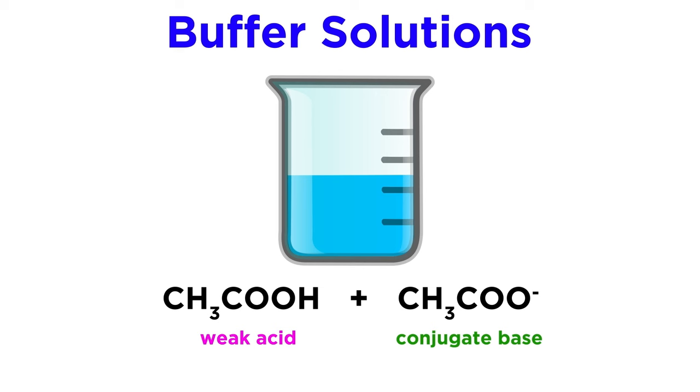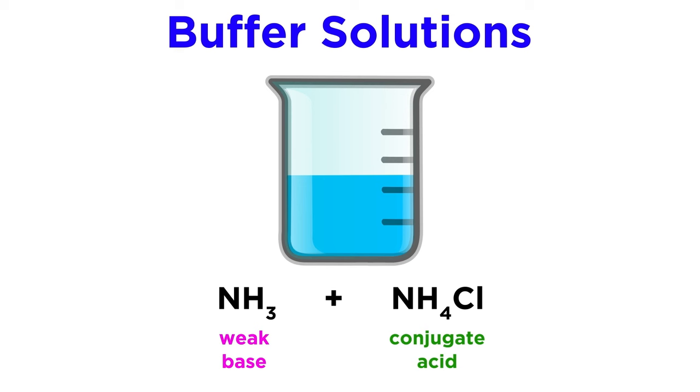Another such example involving a weak base and its conjugate acid would be a buffer solution made from ammonia and ammonium chloride, which provides the ammonium ion. Just one proton transfer separates these substances.